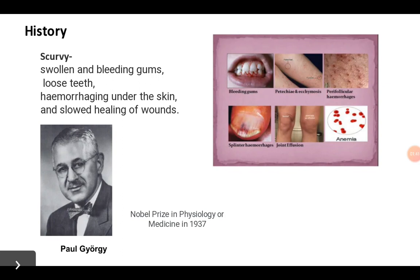For these studies, Paul György was awarded the Nobel Prize in Physiology or Medicine in 1937. His actual research work is in biological oxidation reduction reactions. The 1937 Nobel Prize was shared between Paul György and Krebs.